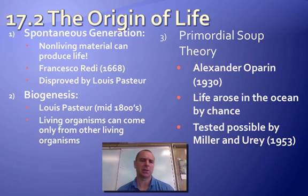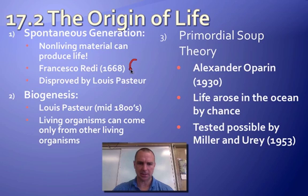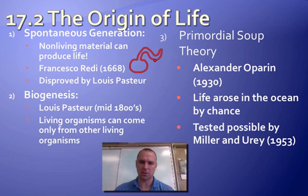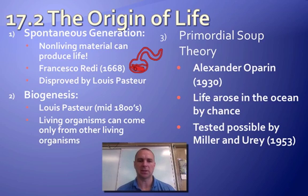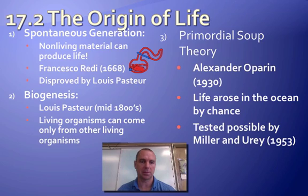People still believed in spontaneous generation until Louis Pasteur came along in the mid-1800s. He did an experiment using what's called a gooseneck flask — a flask with a curved neck so that things falling in can only reach the neck and can't reach the liquid in the flask. He put a nutrient-rich broth in the flask and left it for 365 days, and nothing grew. He then came back, broke the neck off, and the very next day things were growing in the broth.